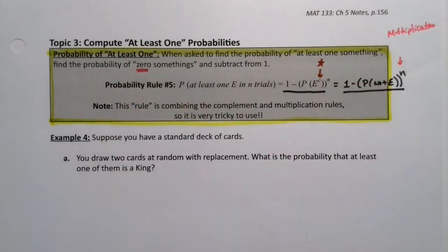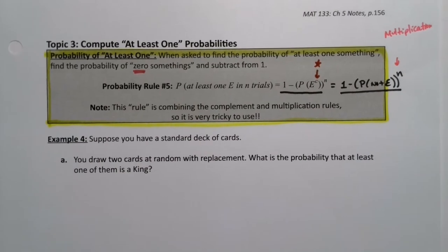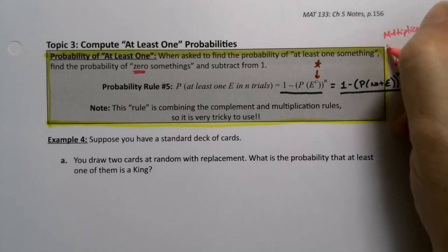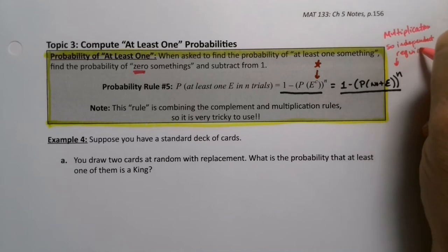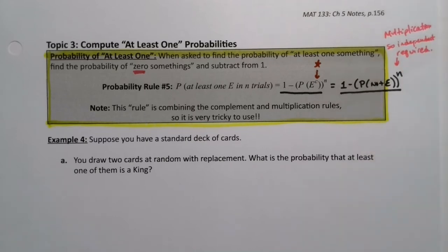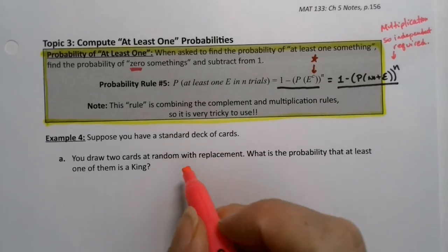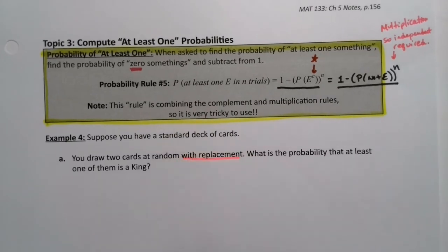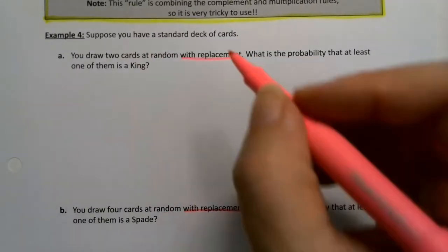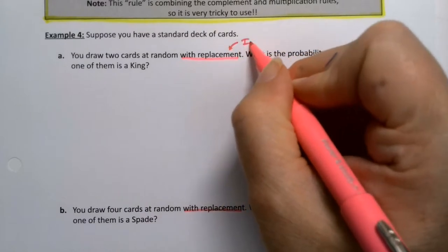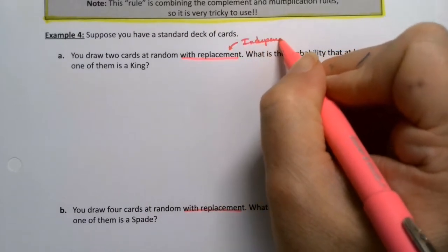The 'zero somethings' piece is actually a multiplication, as we just learned on the previous page. That means independence is still required, just like it has been all along. In the example I'm giving you, I keep saying 'with replacement' because I want the draws to be independent so we can use the multiplication rule, which is kind of hidden inside rule number five.